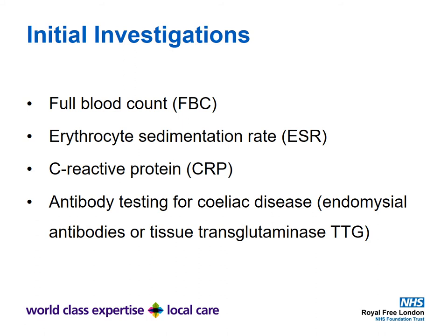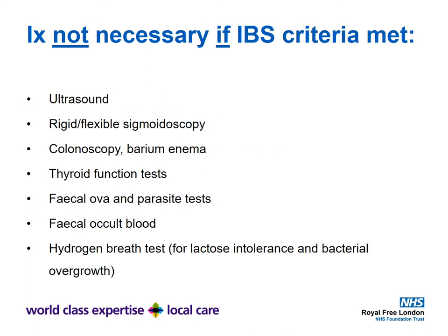The initial investigation profile includes full blood count to look for anemia, ESR and CRP to look for inflammatory disease. If you have elevated ESR and/or CRP in the context of IBS symptoms, you are probably looking for inflammatory bowel disease — consider a faecal calprotectin test and referral to gastroenterology. You may also wish to send antibody testing for celiac disease, such as endomysial antibodies, tissue transglutaminase (TTG) antibodies. Investigations are not necessary if IBS criteria are met and there are no red flags.